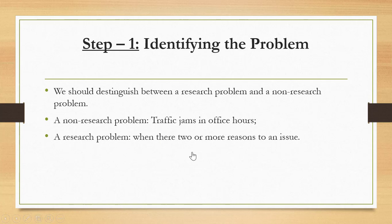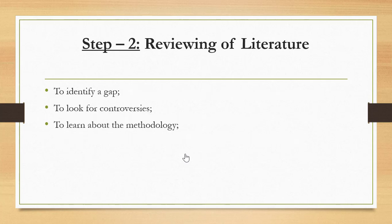This is not a researchable topic because the answer is clear. We don't need to do research to investigate this. A research problem, for example, is when there are two or more reasons to an issue. For example, students' performance in a grammatical test—some students make low grades and others make high grades. We don't know the reasons behind that. It can be anxiety, it can be poor preparation, etc.